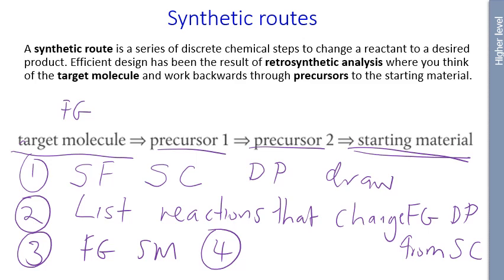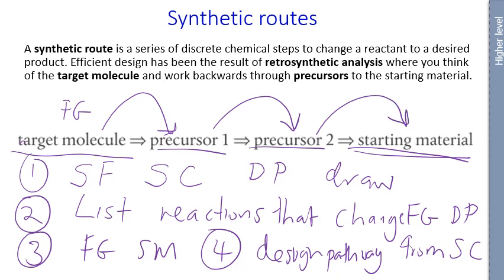And finally, step four is design a reaction pathway. How do you get from a target molecule to precursor one, what changes in the functional group, and then what functional groups do you need in precursor two to get to precursor one? And finally, what starting materials are you going to need to get to precursor two? This is known as retrosynthesis. So retrosynthesis is going from the target molecule to the starting material.